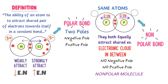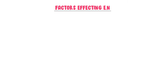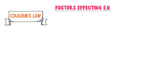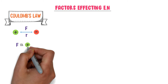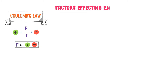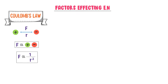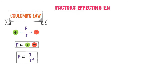We will learn more about polar and nonpolar covalent bonds in our next lecture. Now let me teach you the factors affecting electronegativity. My personal trick to learn factors affecting electronegativity is understanding Coulomb's law of charges. According to Coulomb's law, the attractive force between two charges is directly proportional to the product of magnitude of the charges, and inversely proportional to the square of the distance between them. Using these two points, we can easily understand the factors affecting electronegativity.